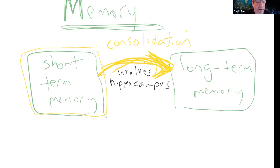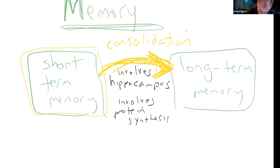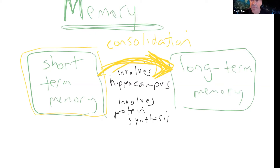The other thing people have found about consolidation is that it involves protein synthesis. There's something physical that happens where you are adjusting the weights of synapses. Experiments have blocked consolidation by giving animals drugs that block protein synthesis, and they can't form new memories.